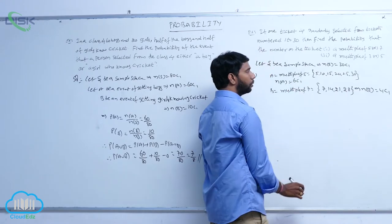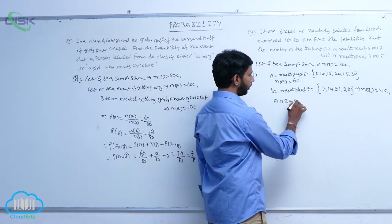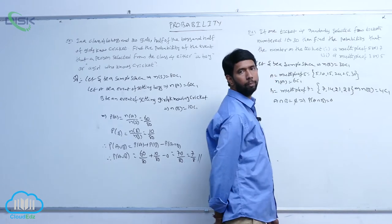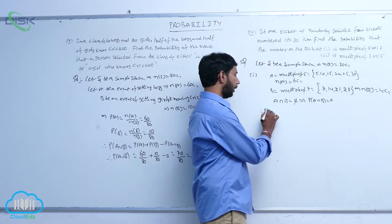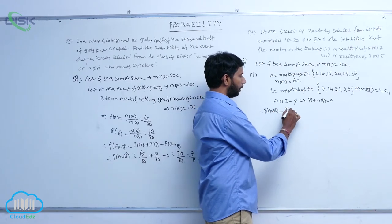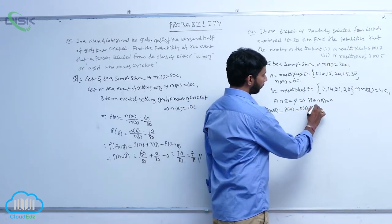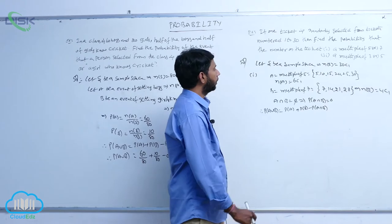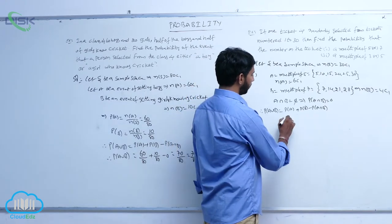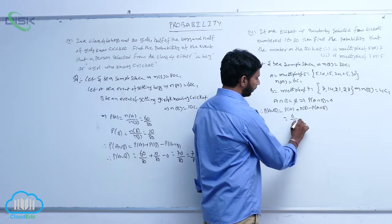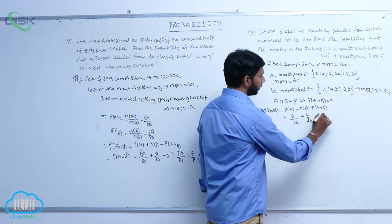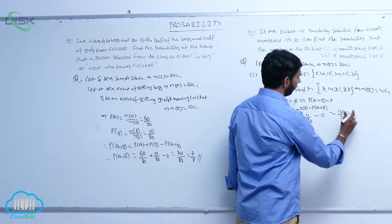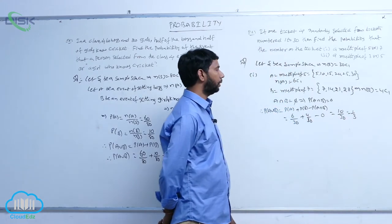Here N of A is equal to 6 C1. A intersection B is equal to the empty set, so probability of A intersection B equals 0. Therefore P of A union B is equal to P of A plus P of B minus P of A intersection B, which is equal to 6 by 30 plus 4 by 30 minus 0, equal to 10 by 30, equal to 1 by 3.